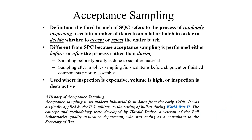In this chapter we will cover different things, for example how to construct an operating characteristic curve, what is producer risk, what is consumer risk, and different risks in quality. Starting from the definition: acceptance sampling is the third branch of statistical quality control charts, which refers to the process of randomly inspecting a certain number of items from a lot or batch in order to decide whether to accept or reject the entire batch.